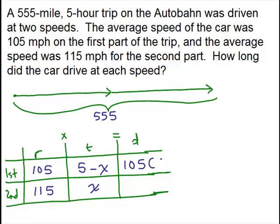So for the first part of the trip, we have 105 times 5 minus X, which we could simplify. What's 105 times 5? That's 525 minus 105 times X is 105X. So that's what it would be once you simplified it. And where does that go? That's the distance for the first part of the trip, which is right here. 525 minus 105X.